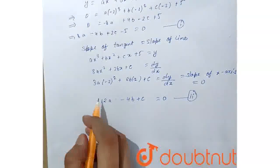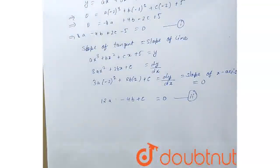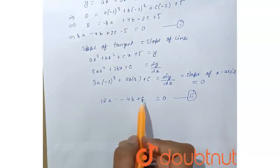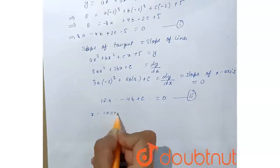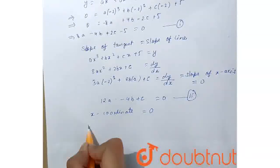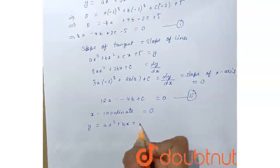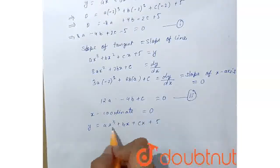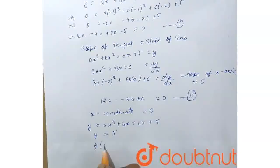Now, the curve cuts at y-axis, sorry, it's y-axis, so the x coordinate will be 0. So, put x equal to 0 in the equation y equals ax³ plus bx² plus cx plus 5. On putting the value of x equal to 0, we will get y equals 5. So, point q will be (0, 5).